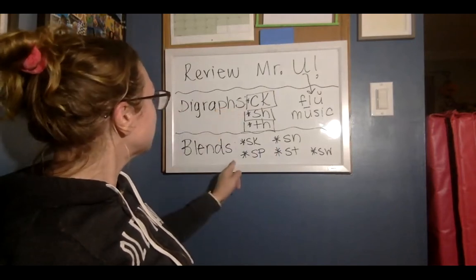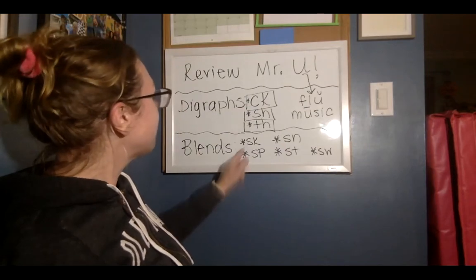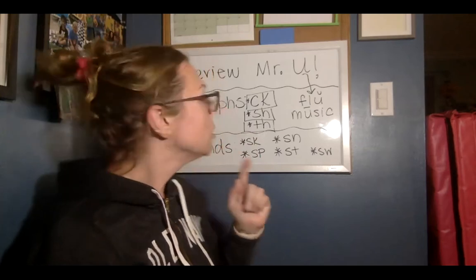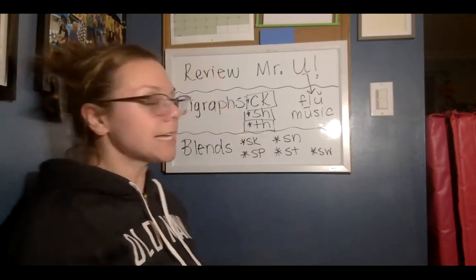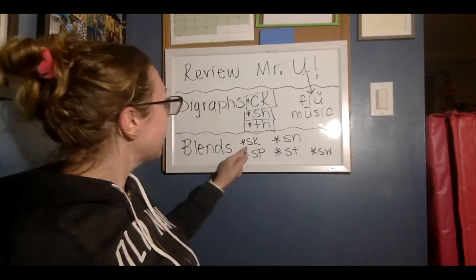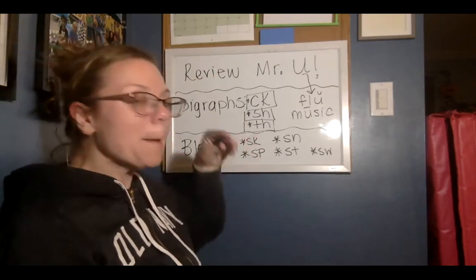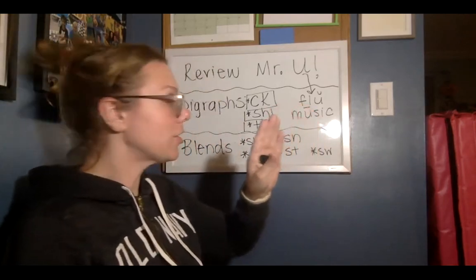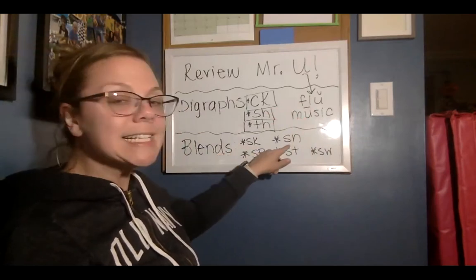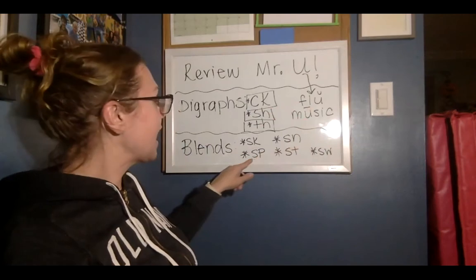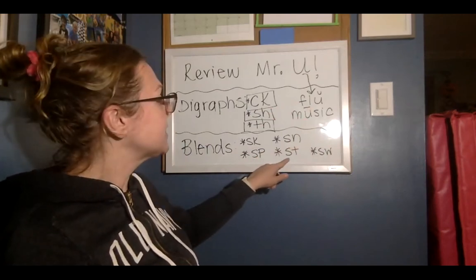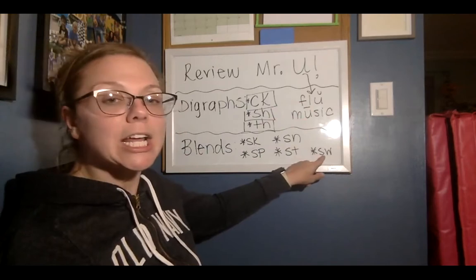The last thing we're going to talk about is blends. Those are when two letters go together, but they do each speak — so not like a digraph where it says one sound. These blends, they really do both speak, but they blend together. So we have SK, SN, SP, ST, and SW.